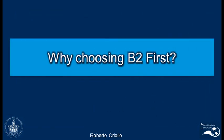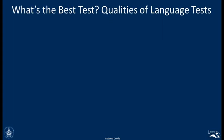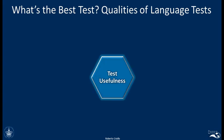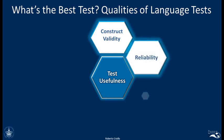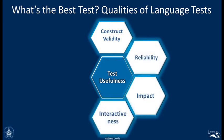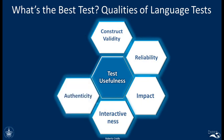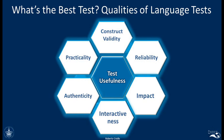A second important point in this introductory module is the reason why we should choose B2 First and not another kind of test. In order to decide what's the best test to take, we need to look at something called test usefulness — in other words, the qualities of language tests. Test usefulness is made up of six different components: construct validity, reliability, impact, interactiveness, authenticity, and practicality.